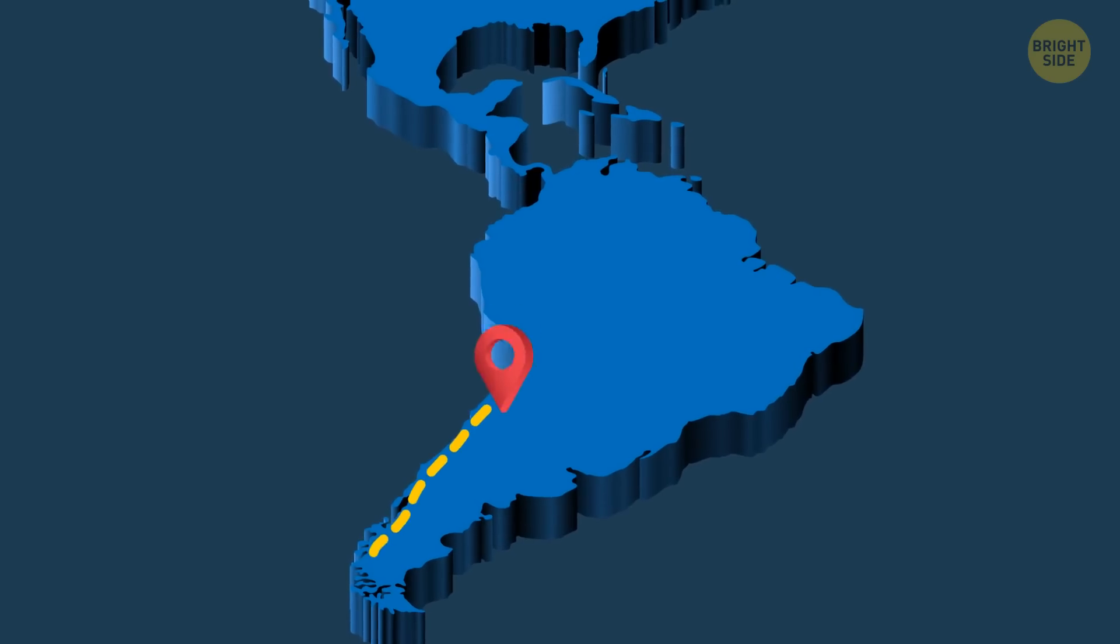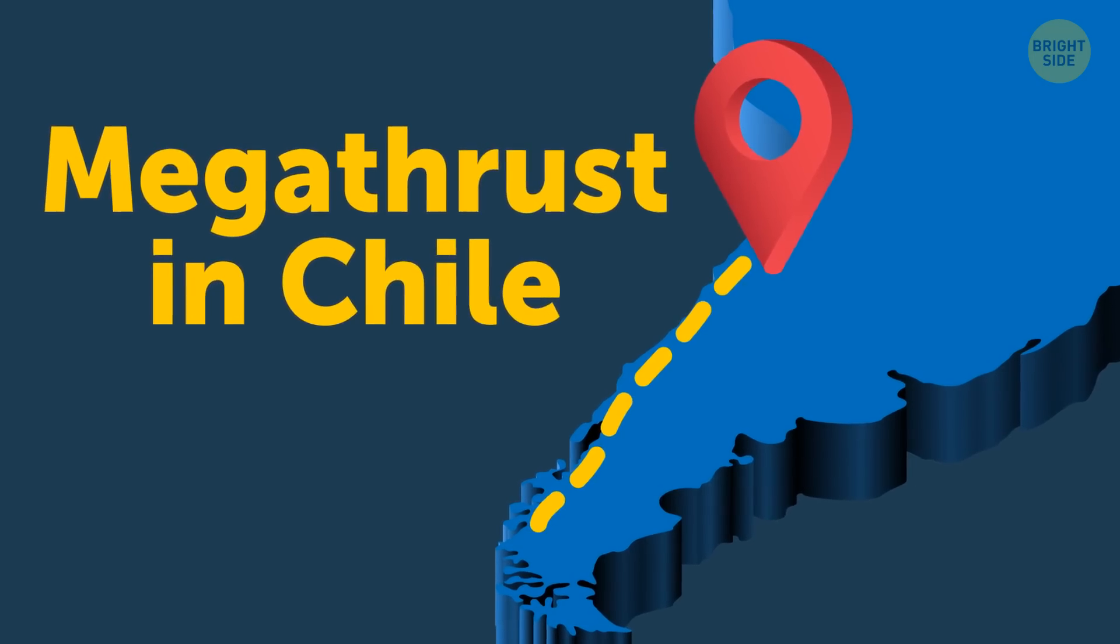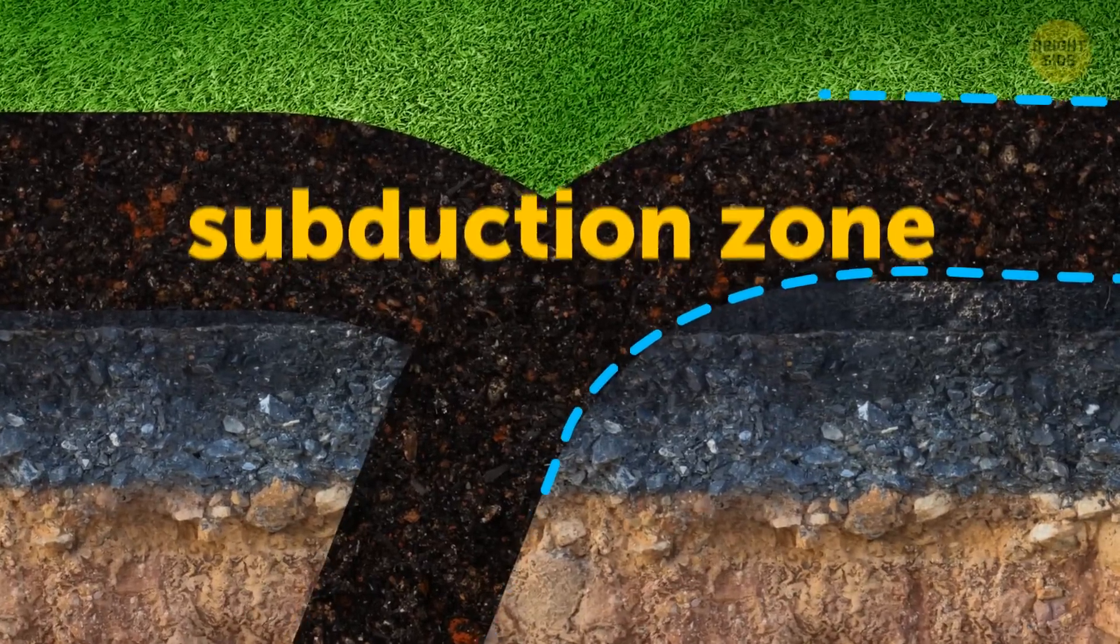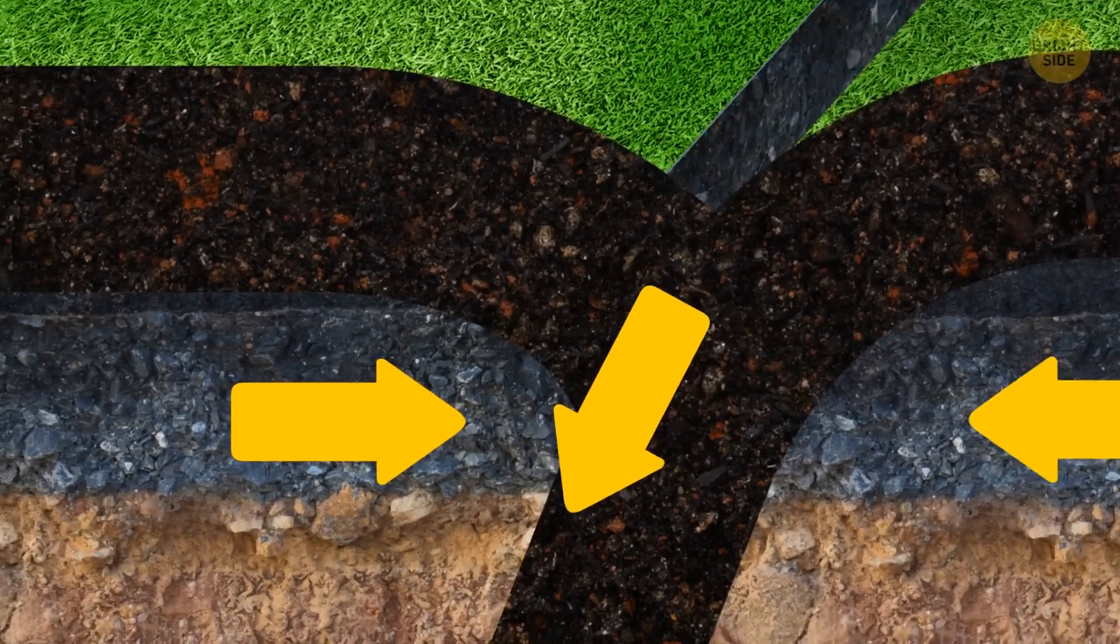Yet there's another earthquake hazard not so far away from the previous one. The megathrust in Chile. The country sits right above the subduction zone, an area where two tectonic plates meet and go one beneath the other.